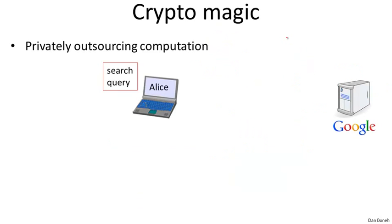There are some applications of cryptography that are purely magical. The first is what's called privately outsourcing computation. I'll give you an example of a Google search just to illustrate the point — imagine Alice has a search query she wants to issue.